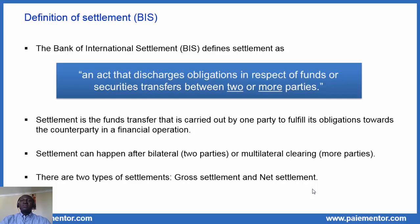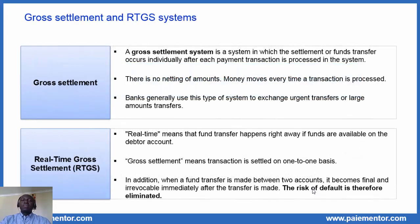Let's consider gross settlement first. In a gross settlement system, the settlement of funds transfer occurs individually after each payment transaction is processed. So every time a transaction is processed, a fund transfer is carried out. There is no clearing and no netting of amounts. If the money cannot move, then the related transaction cannot be processed.